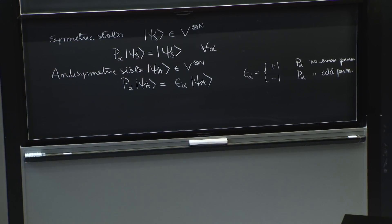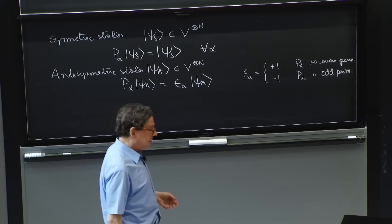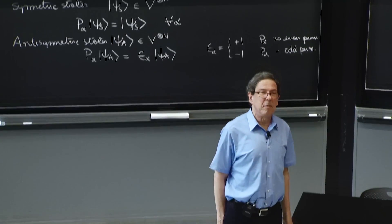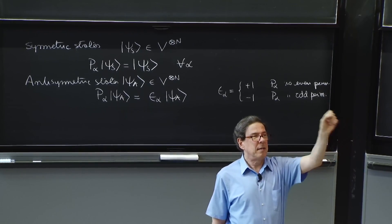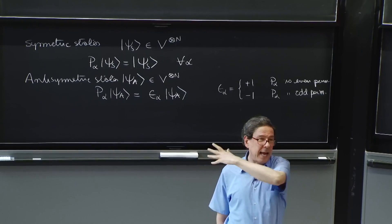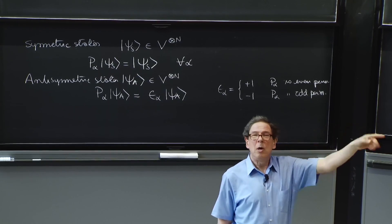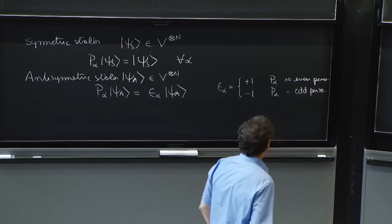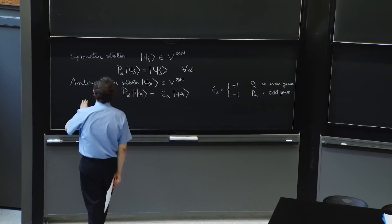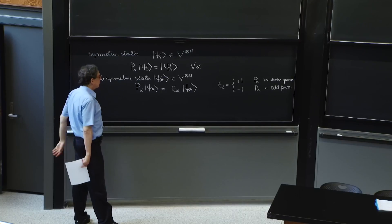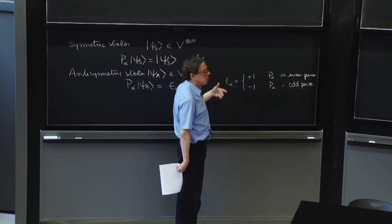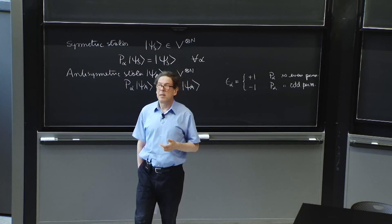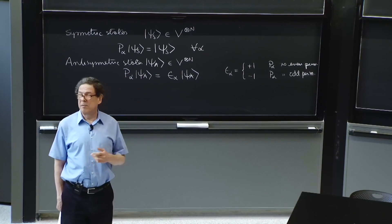Epsilon_alpha equals minus 1 if P_alpha is an odd permutation. Whether a permutation is even or odd depends on whether it is built with an even or odd number of transpositions — transpositions being permutations in which two of the n states are swapped. All permutations can be built from transpositions, so you can determine if a permutation is even or odd from whether it requires an even or odd number of transpositions.